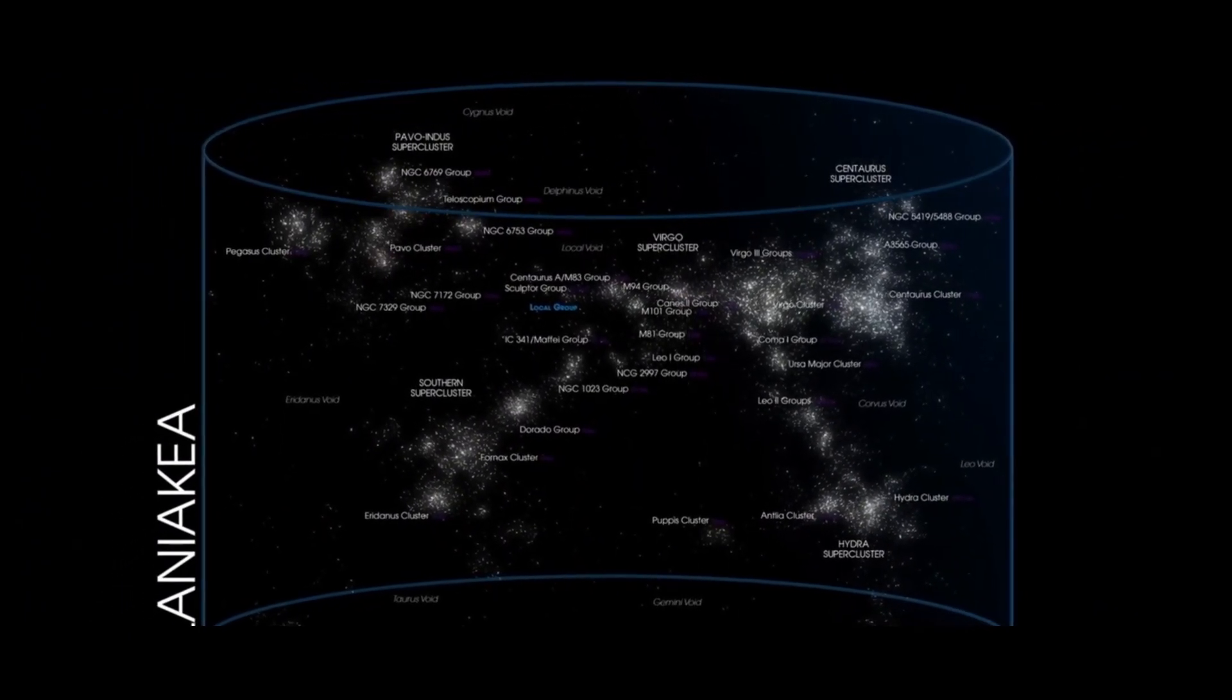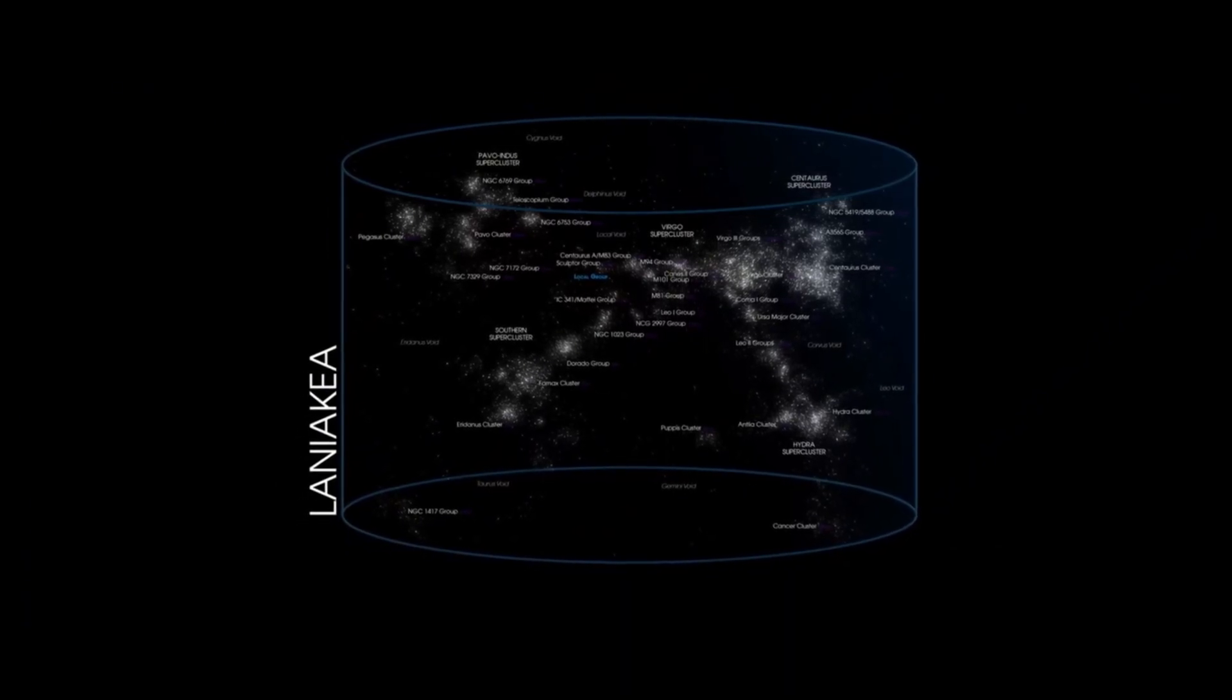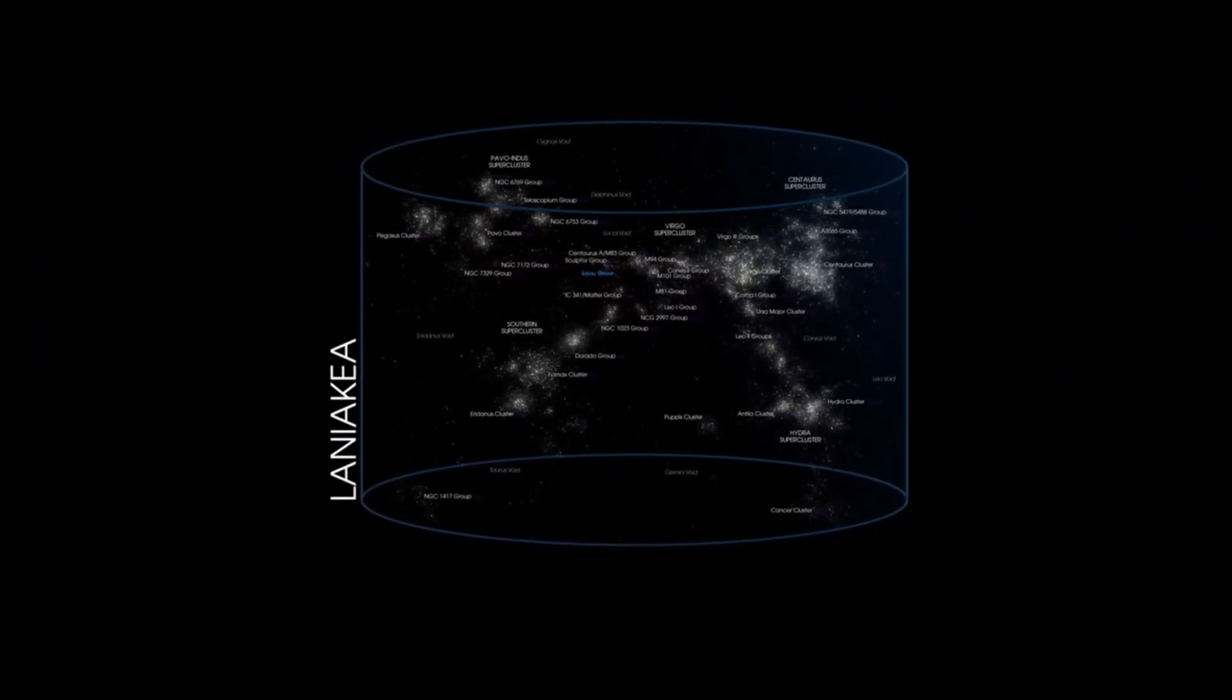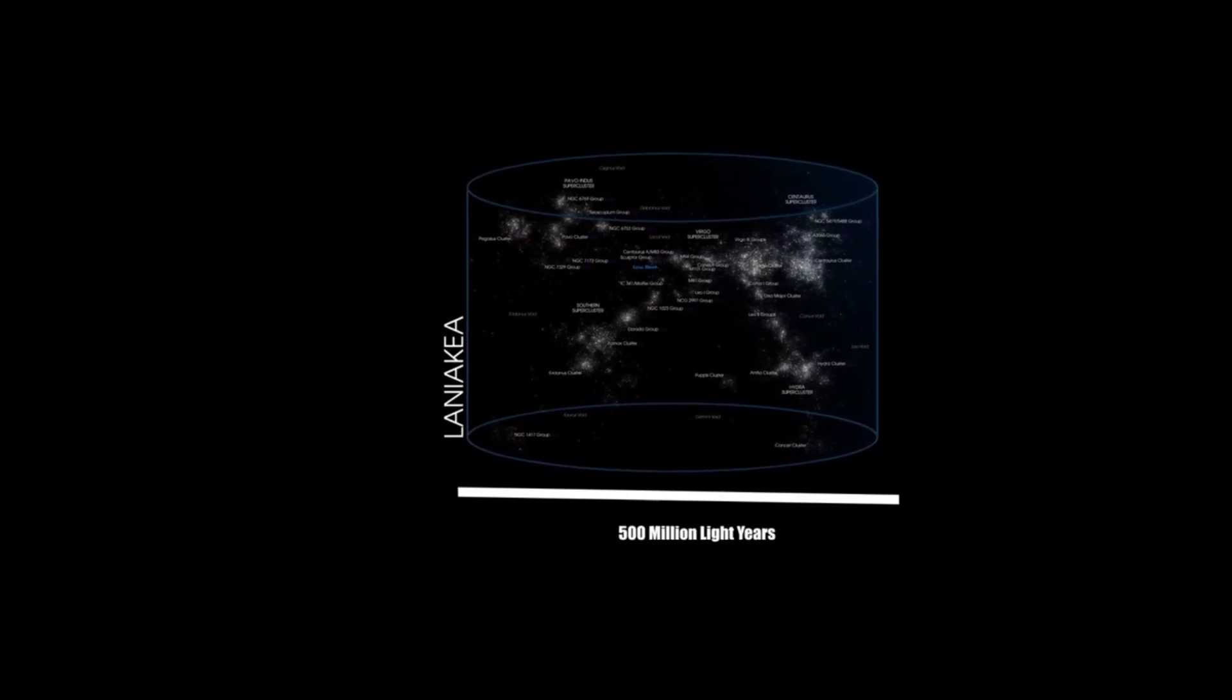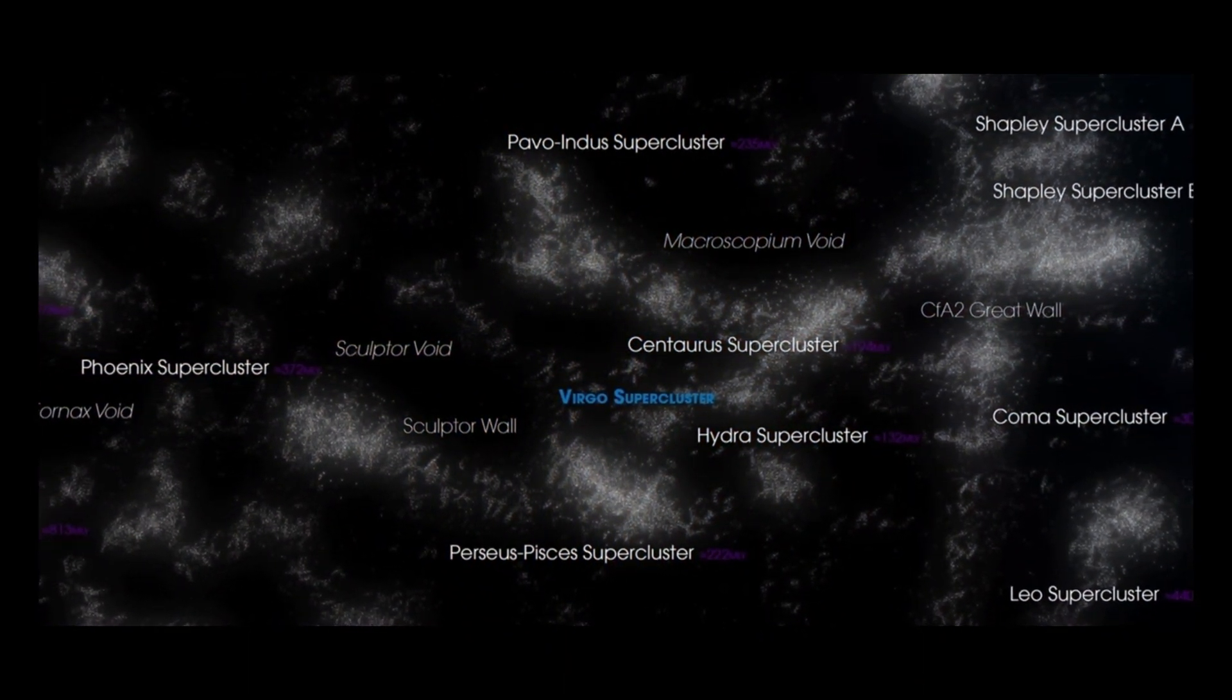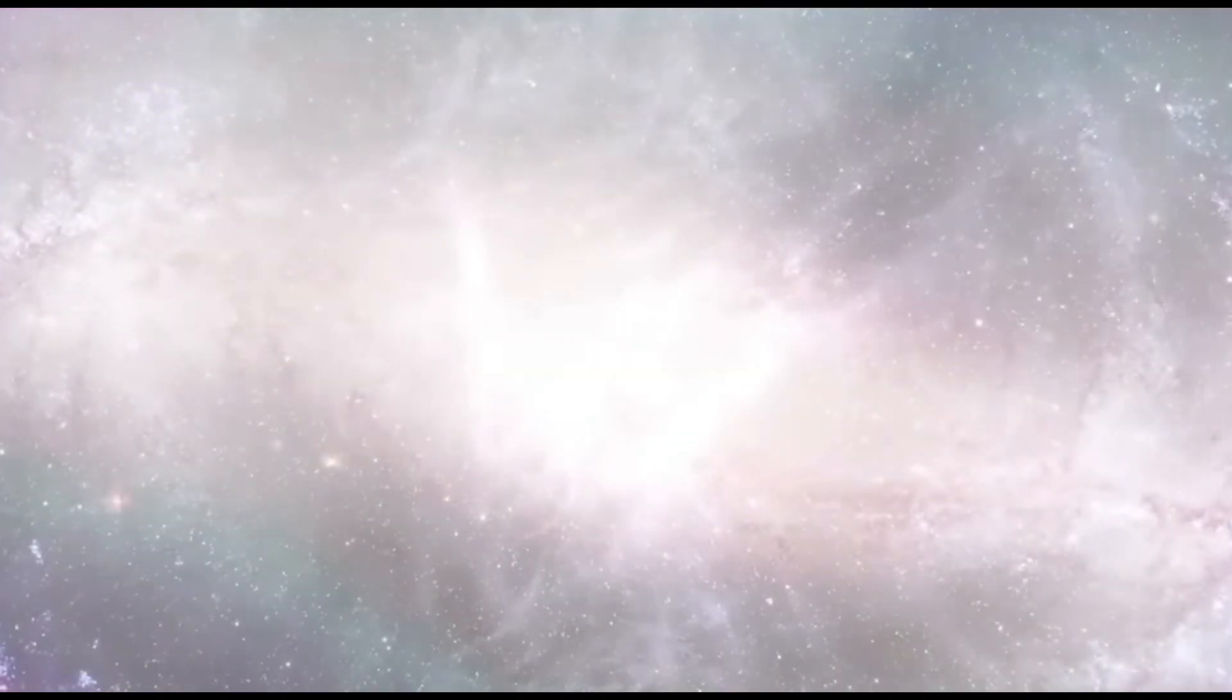As we journey out from the Virgo Supercluster, we encounter the Laniakea Supercluster, which includes the Virgo Supercluster. It contains the mass of 100 million billion suns, galaxy clusters, and countless gravitational forces. In the Laniakea Supercluster, the Milky Way and Virgo Supercluster look like just components. If the universe is 13.8 billion years old and has been expanding since the Big Bang, this explains how it can be much larger than 13.8 billion light years across.